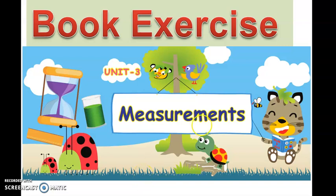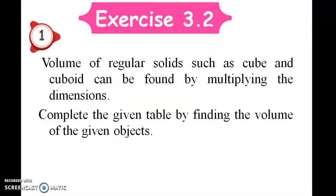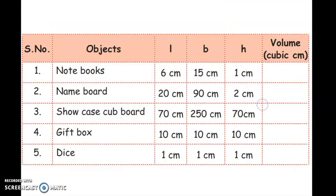Good morning students, today we are going to see the book exercise of unit theory that is measurement. Exercise 3.2: volume of a regular solid such as cube and cuboid can be found by multiplying the dimensions. Complete the given table by finding the volume of the given object. The objects are notebook, name board, showcase, cardboard, gift box, and dice.